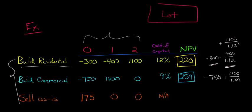And then selling as is, we're just getting cash up front, so we don't have to discount any cash flows in period one or two back to the present. Because there are no cash flows. We're just selling the property as it currently stands as a vacant lot. We don't even have to worry about the cost of capital. And so as is, is going to be a net present value of $175.